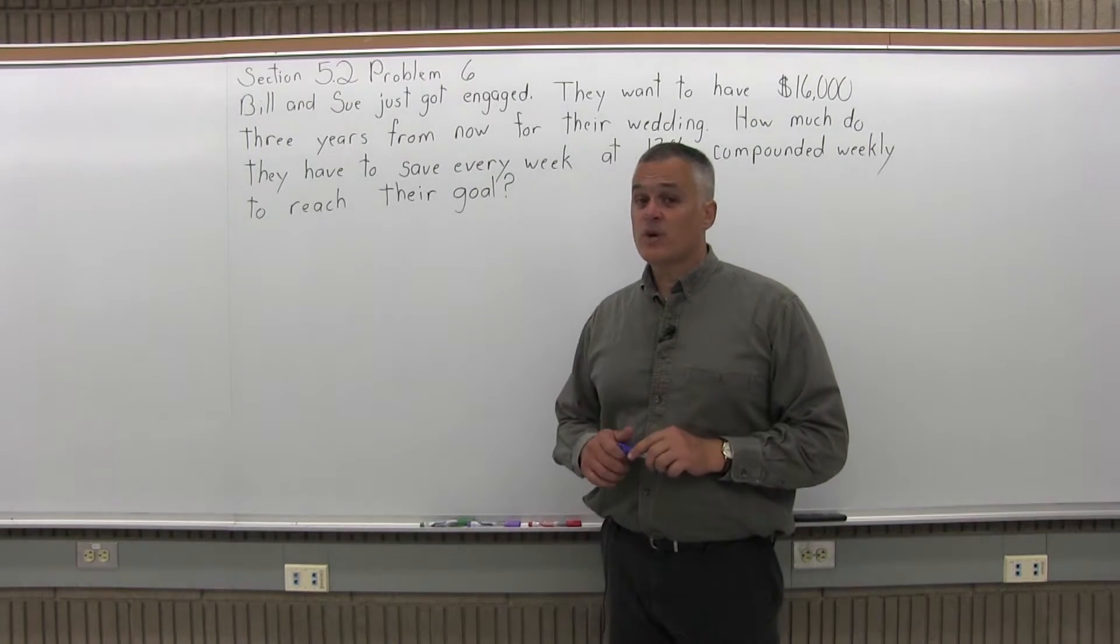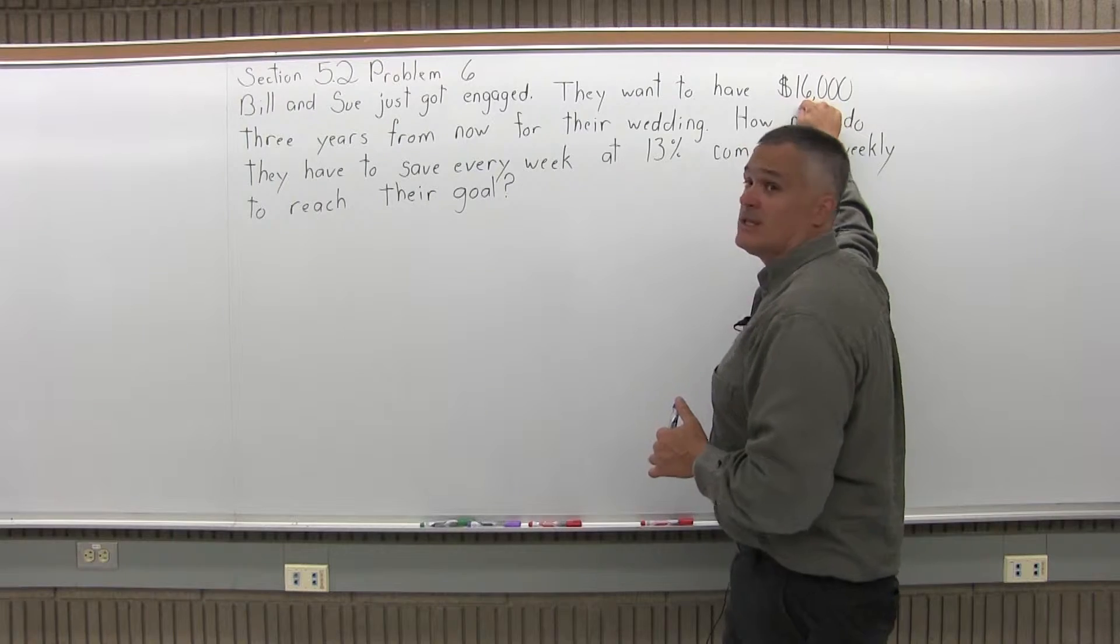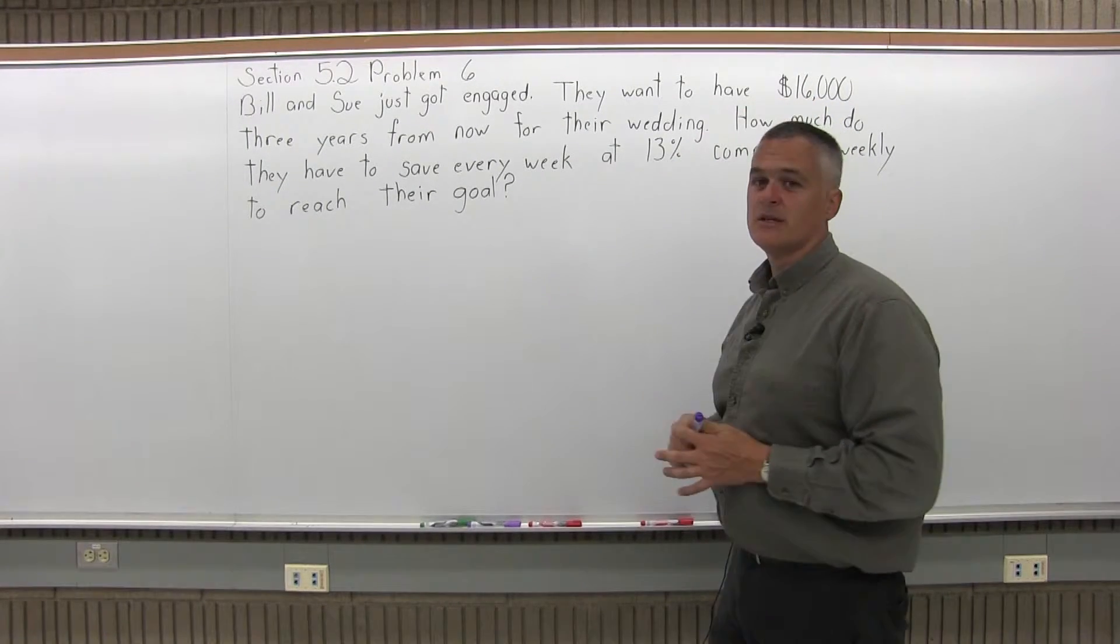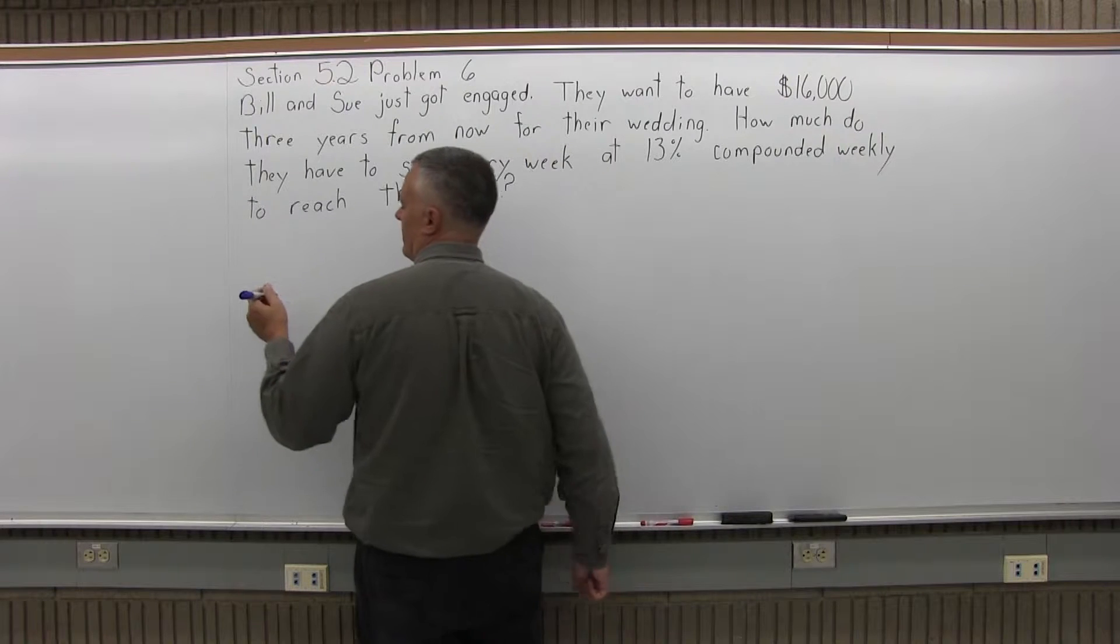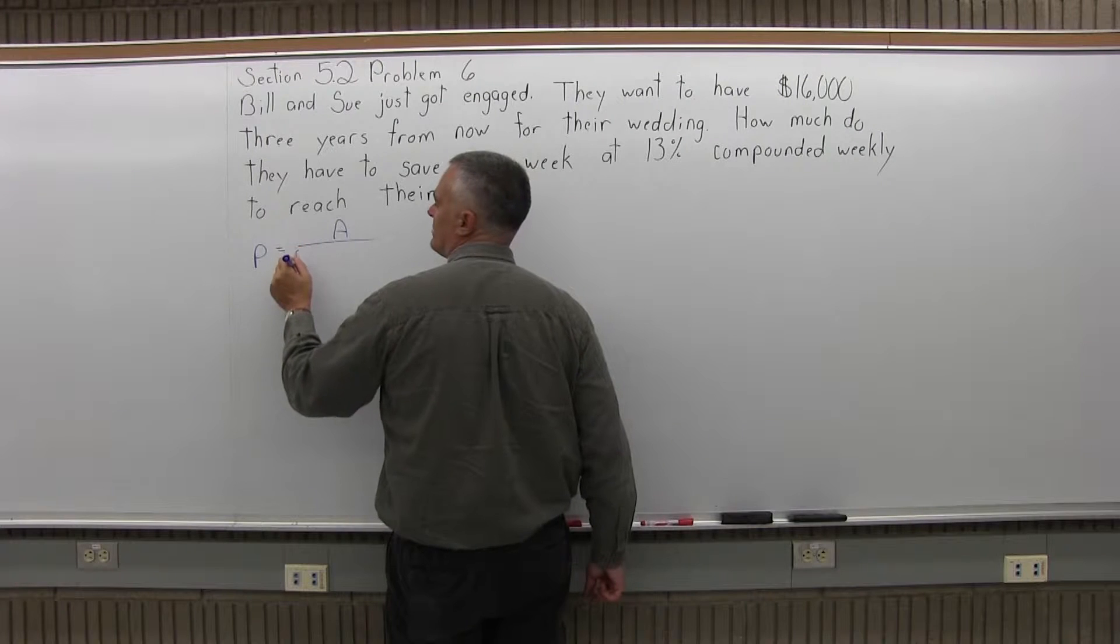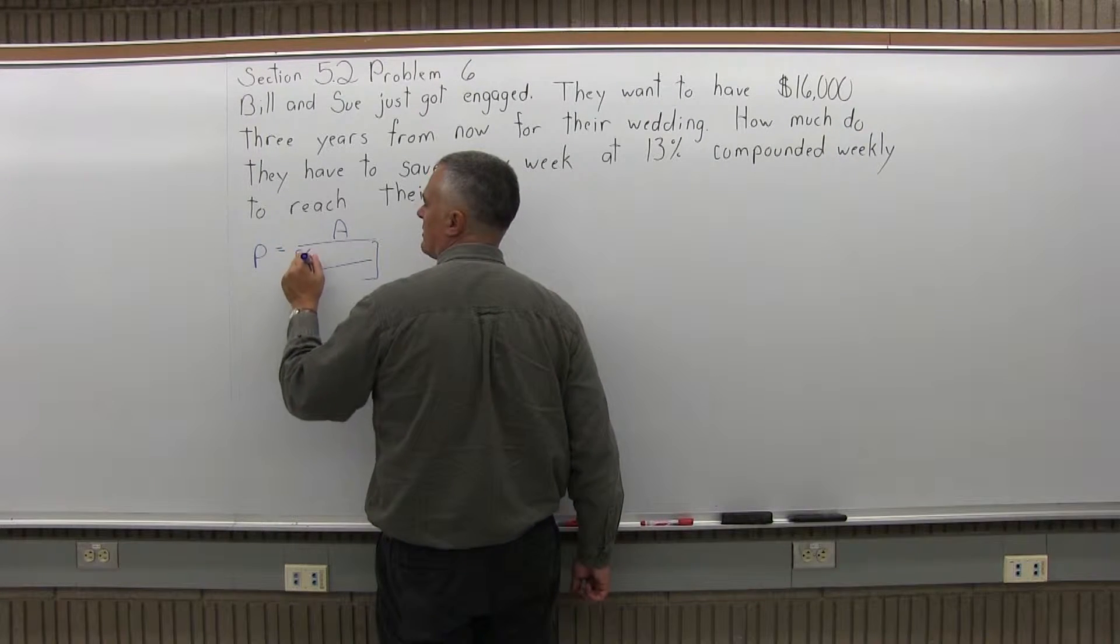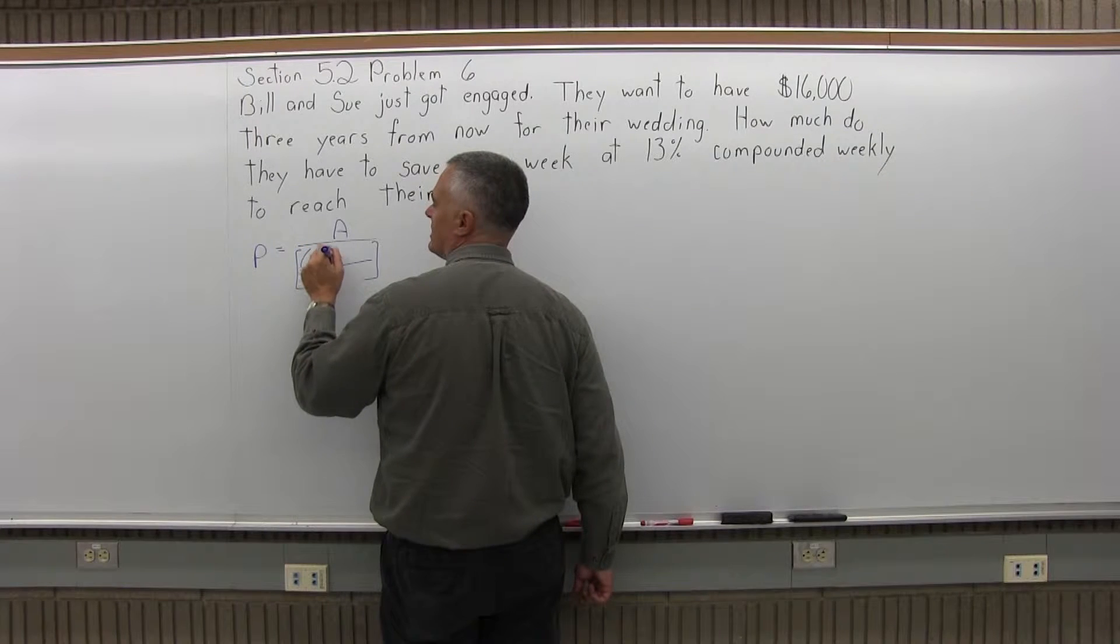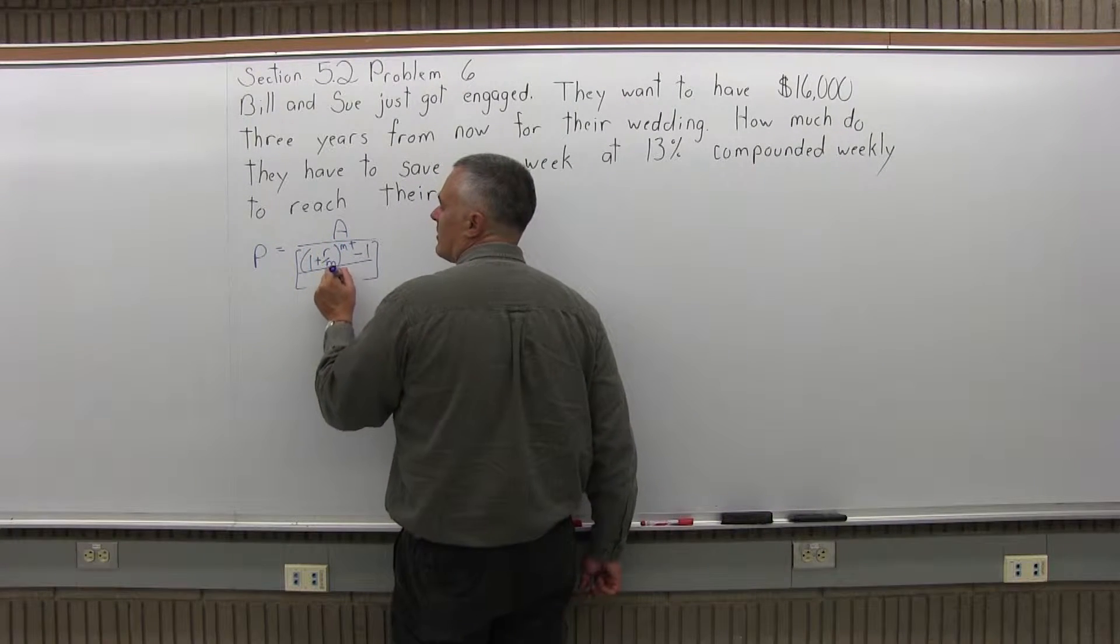So this is a sinking fund question, and the reason that it's a sinking fund question is you know what the end result needs to be, and you want to calculate the regular savings. The sinking fund formula is P equals A over some big brackets that have a numerator and a denominator. In the numerator of the brackets you have 1 plus R over M to the M times T power. There's a minus 1 after that, and an R over M in the denominator.